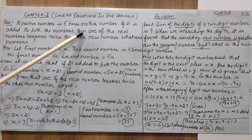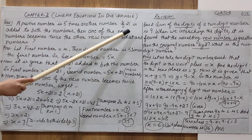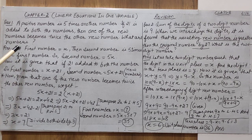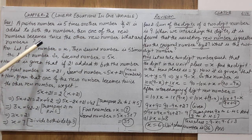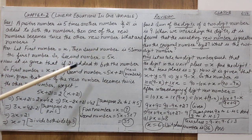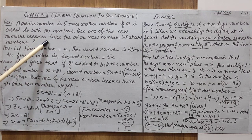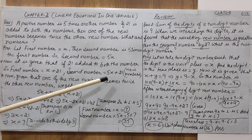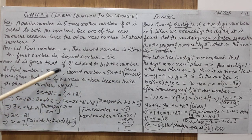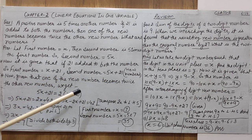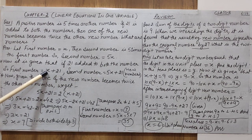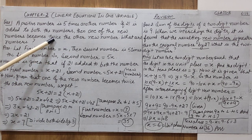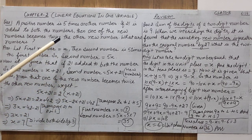Moving to the next condition: one of the new numbers becomes twice the other new number. We have two new numbers — x + 21 and 5x + 21. Which is greater? Since 5x is greater than x, the number 5x + 21 is the greater one and x + 21 is the smaller one.